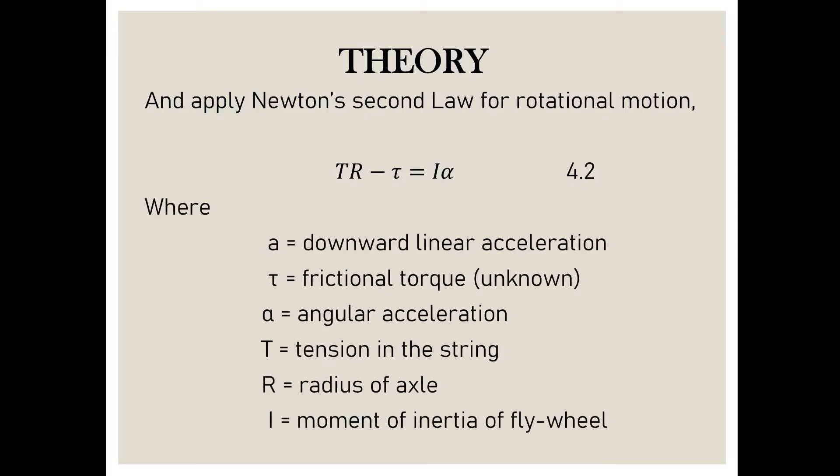Where a is the downward linear acceleration, tau is the frictional torque, alpha is the angular acceleration, T is the tension in the string, R is the radius of axle, and I is the moment of inertia of the flywheel.